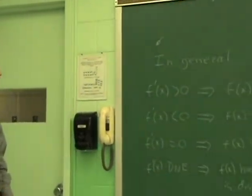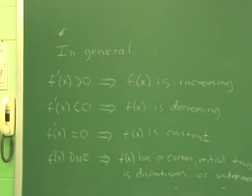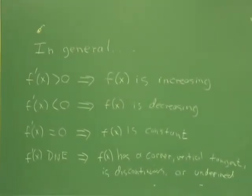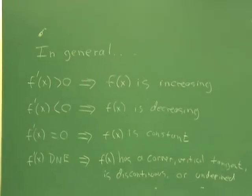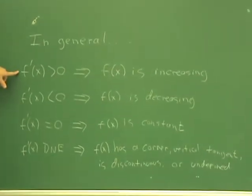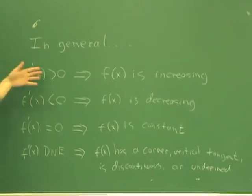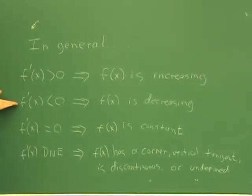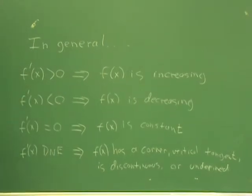The first question that is usually asked when going to sketch a curve is: where is the function increasing or decreasing? We figure out if a function is increasing or decreasing based on the behavior of its derivative. If the derivative is positive on an interval, then the function is increasing on that interval. And if the derivative is negative, then the function is decreasing on the interval.